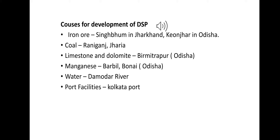Water required for the plant comes from the Damodar River. The plant enjoys excellent transport facility on the Kolkata–Delhi main railway line and also the advantages of Kolkata port. Required cheap labor is easily available from West Bengal, Bihar, and Odisha. The plant manufactures high-grade steel, alloy steel, stainless steel, and structurals.